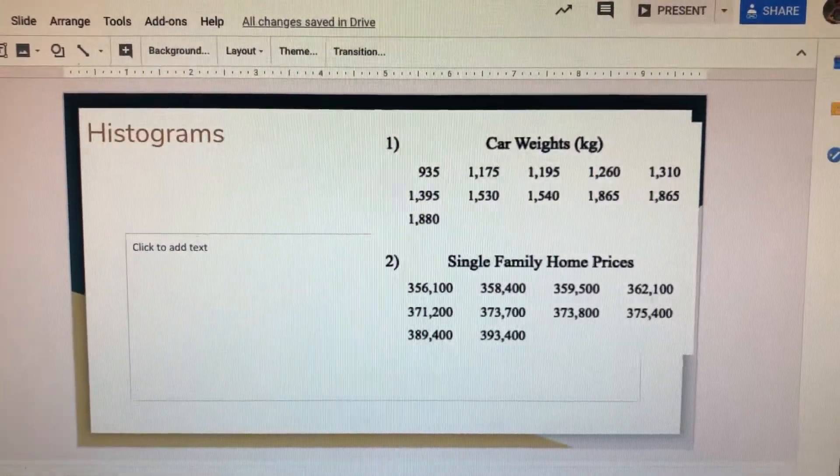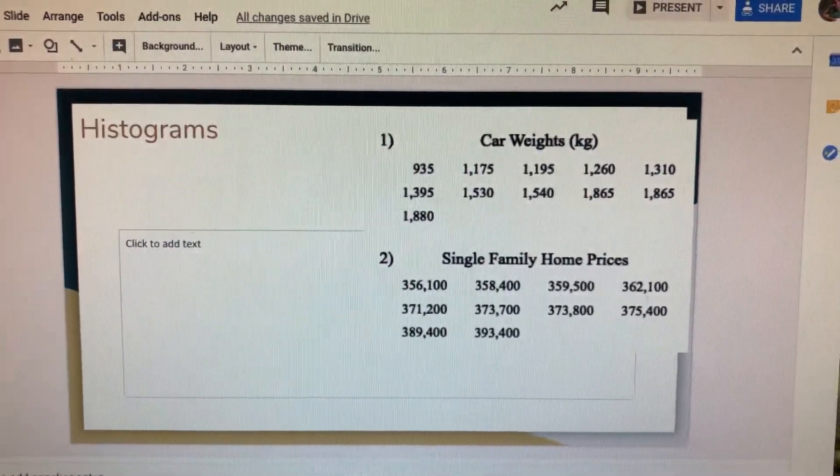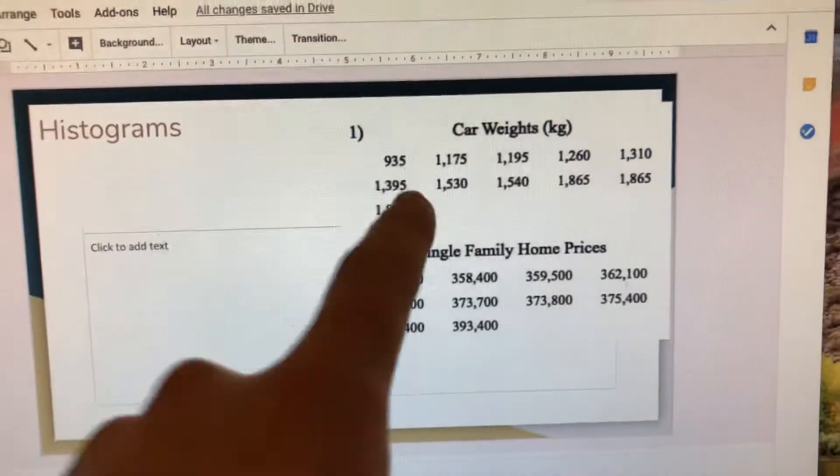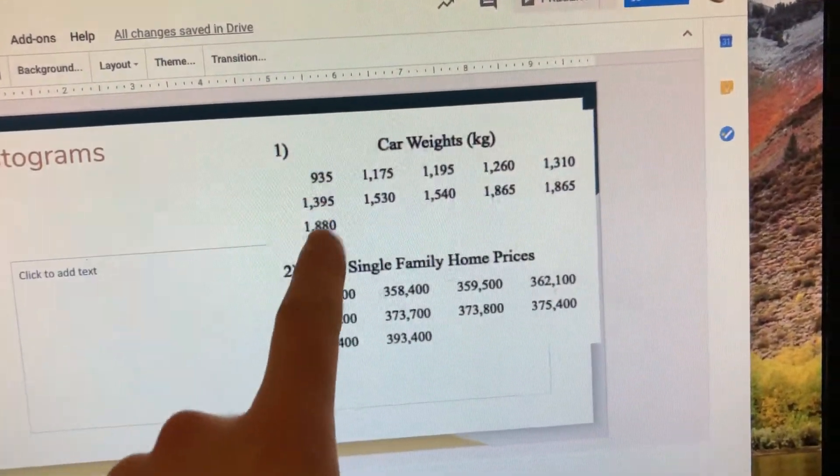So histograms are going to be just like a bar graph, but it's going to be more of a count than every single car, for instance, getting its own bar. This is like 1, 2, 3, 4, 5, 6, 7, 8, 9, 10, 11.